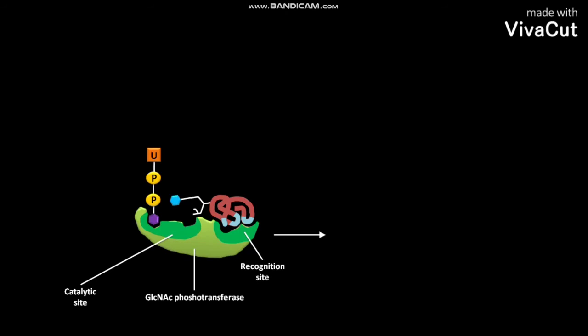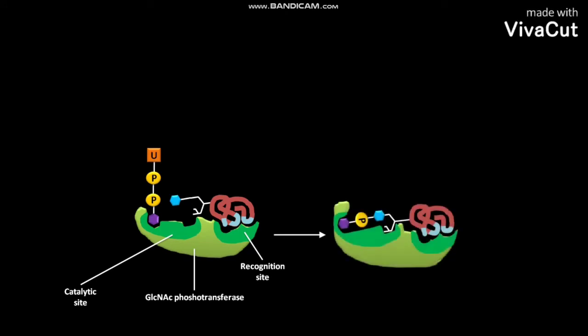After this binding, the catalytic site in the GlcNAc phosphotransferase binds both mannose-N-linked oligosaccharide and UDP-GlcNAc with the release of UMP. As a result, the GlcNAc phosphate attached to mannose in oligosaccharide is formed.